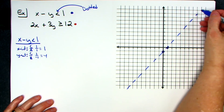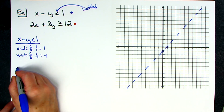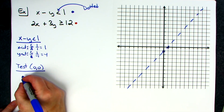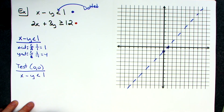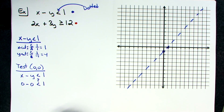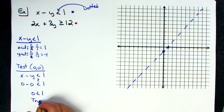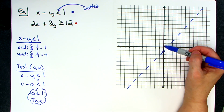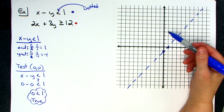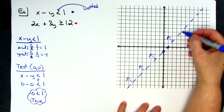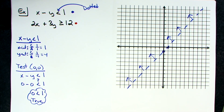Now let's figure out which way we're supposed to shade. I'll test the point zero, zero: x minus y is less than one, so zero minus zero is less than one — zero less than one is a true statement. Because that's true, zero zero is above the line and it made it true, so all those points above the line are going to make it true. Since it's a system I'll use the arrow method — I know I need to shade above.